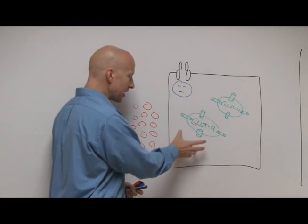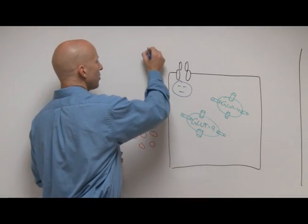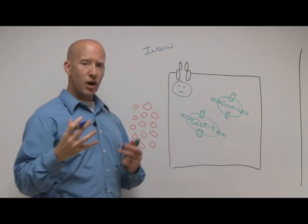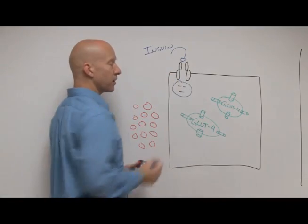Normally, glucose can't get in because these GLUT4 vesicles are on the inside. So here's basically what happens. Your pancreas releases insulin, and insulin is too large, and it's a protein to get inside the cell. So what it does is it has to bind onto a receptor.